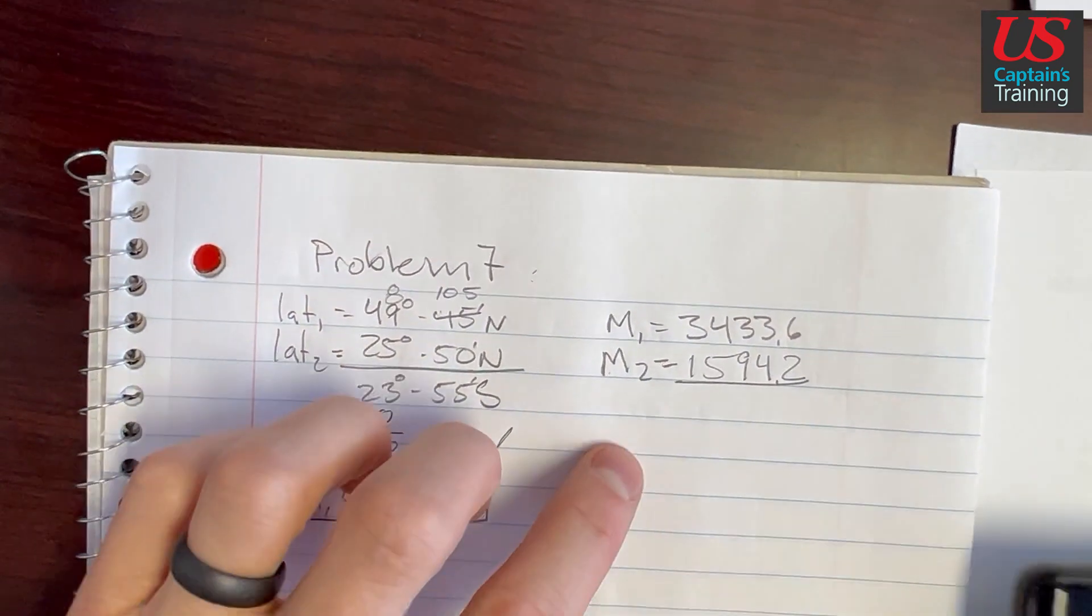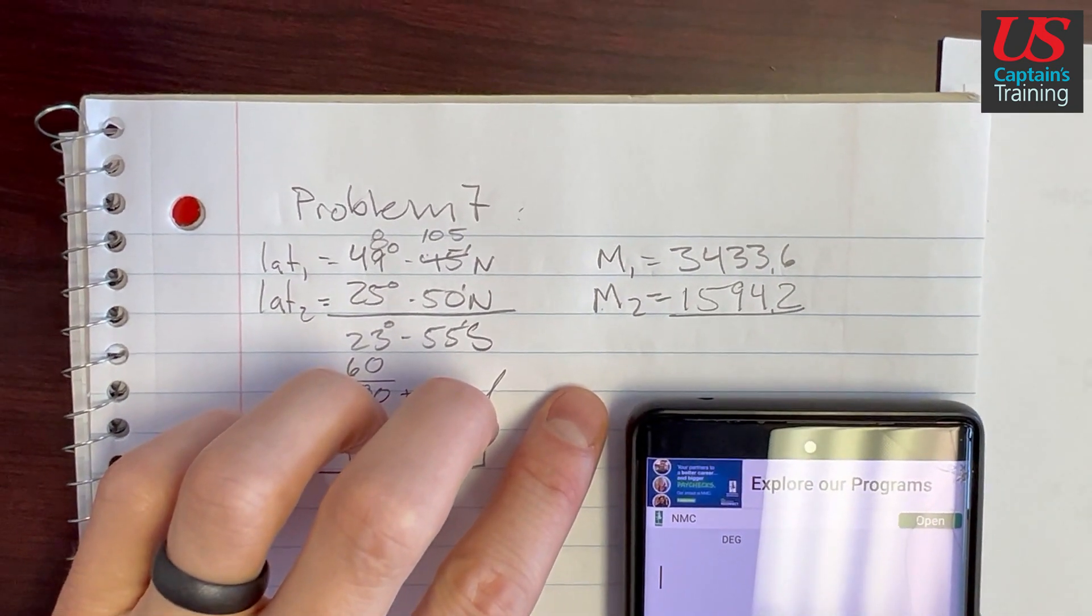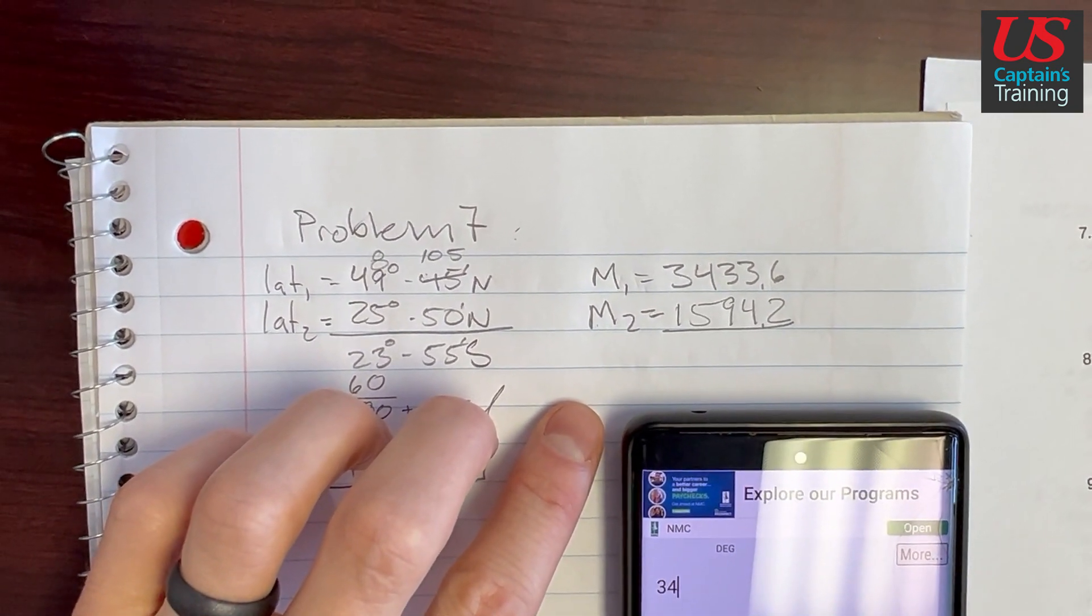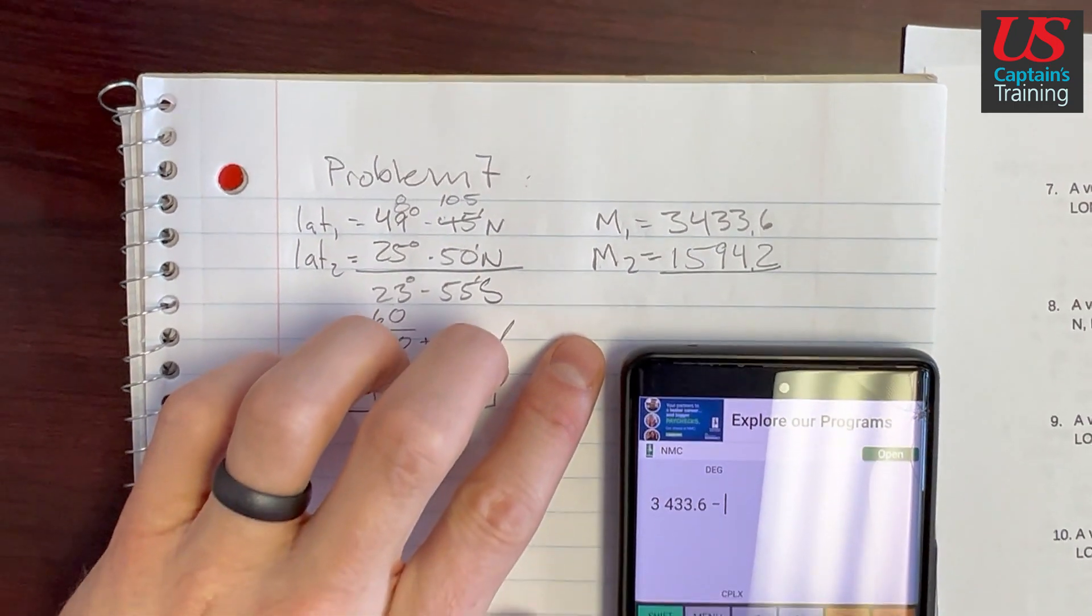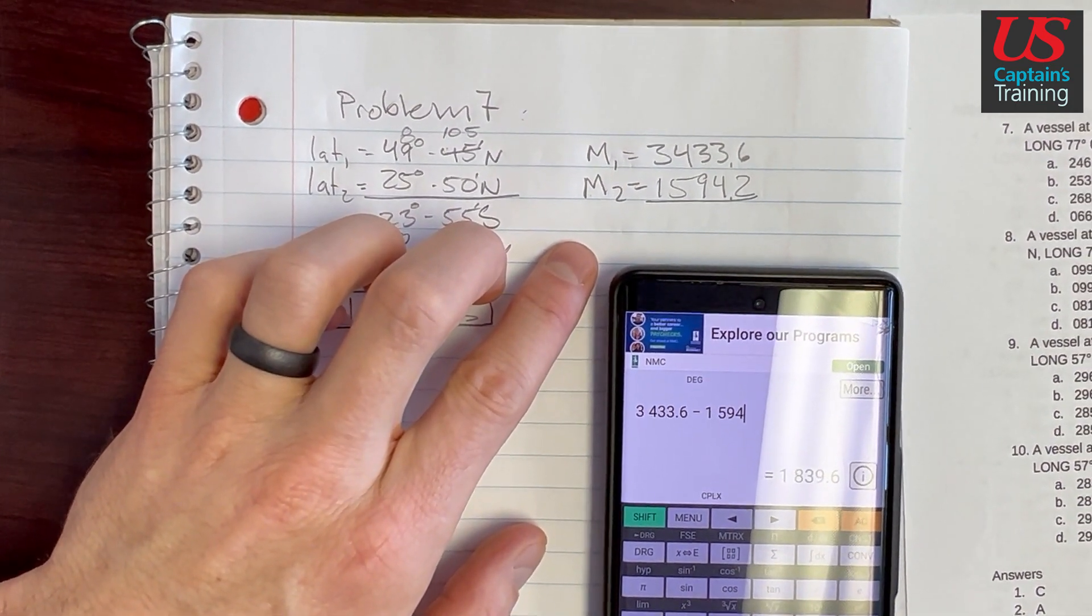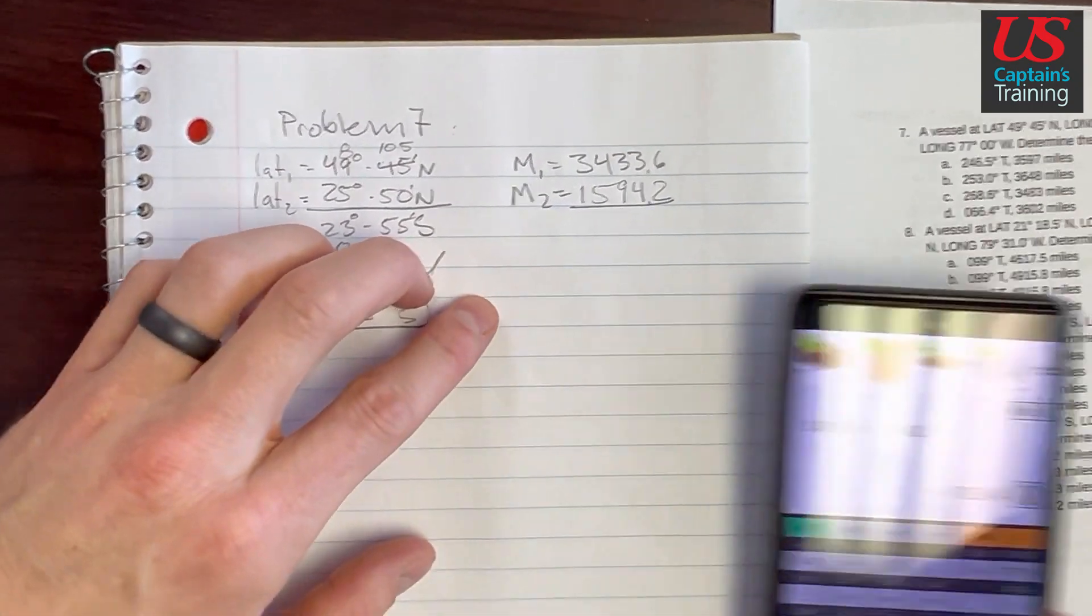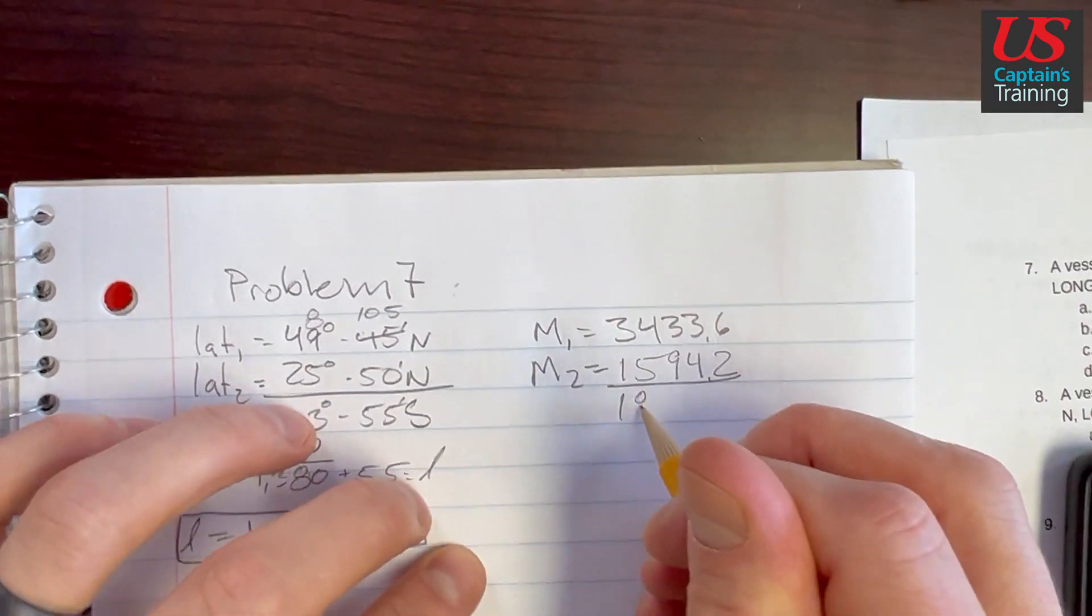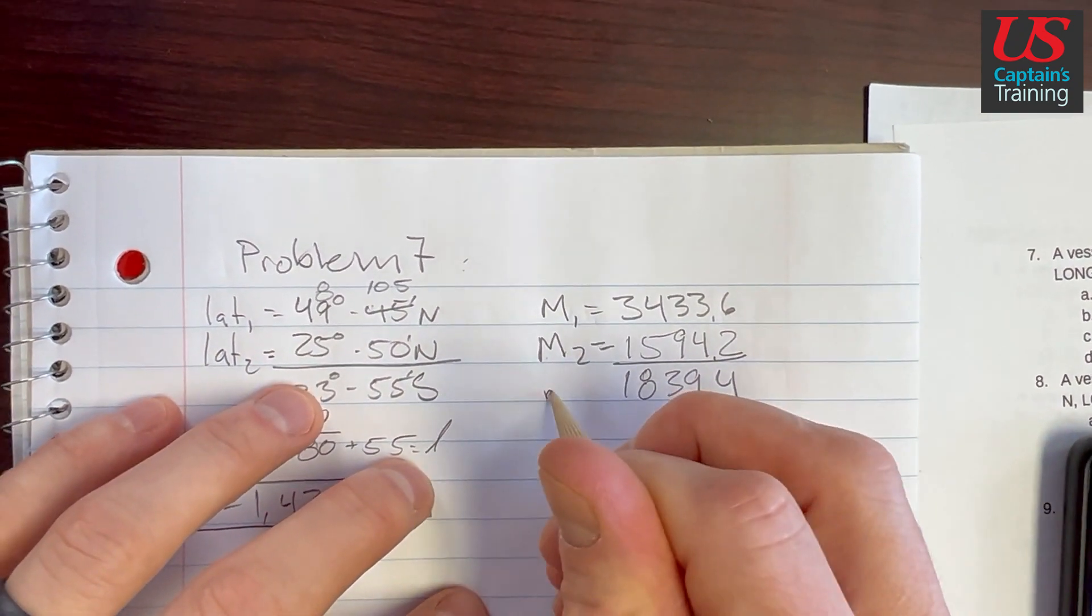Then we subtract these two. So we get 3433.6 minus 1594.2. We get 1839.4. This is our little m.